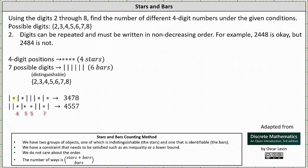Let's look at one more example. Notice in the next string, we start with two bars indicating two switches: from two to three, and then three to four, and then we have a star. Four is assigned to the first digit. Next, we have a bar, and therefore we switch from four to five. Next, we have two stars, which indicates we assign five to the second and third digits. Next, we have two bars indicating we switch from five to six, and then six to seven, and then we have a star. Seven is assigned to the last digit, and then we have a bar indicating we switch to eight, but there are no more stars, and therefore we're done.